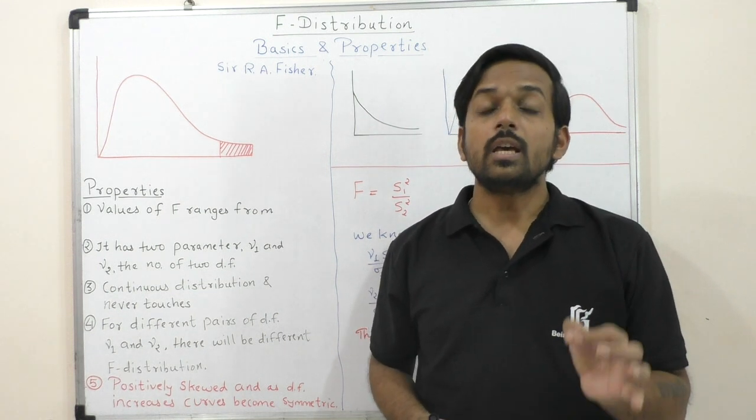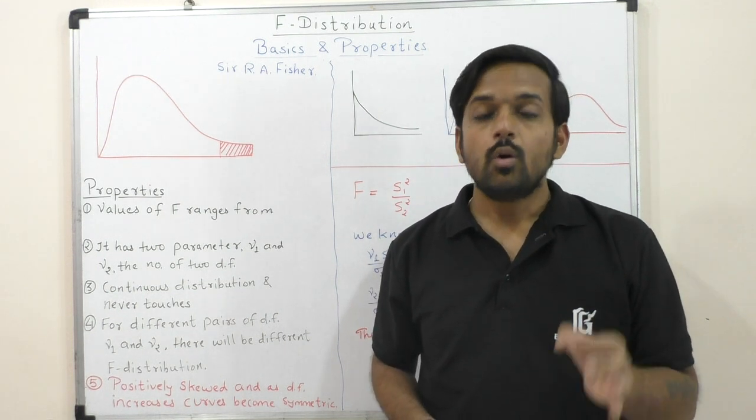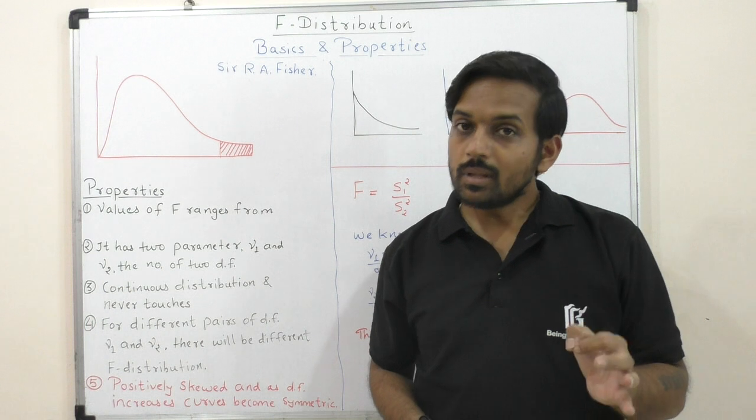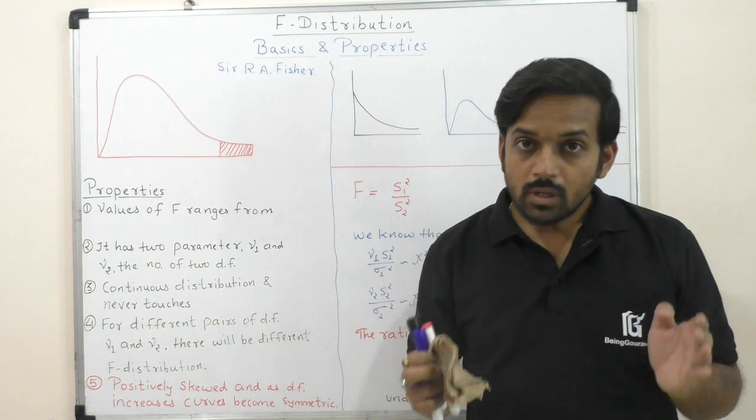Now, what does variance mean? Variance is the square of standard deviation. What does the variance mean — what does the observation's deviation from the mean mean?